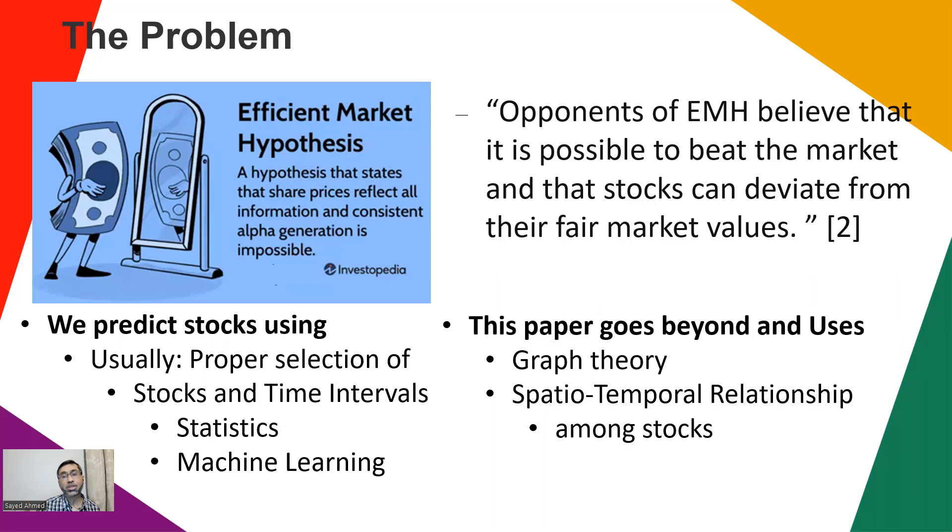And spatiotemporal relationships among the stocks. So graph theory means the stock market, the interactions among the stocks - they represent it as a graph, and then they find out the spatial dependency. When you represent a graph, the spatial relationship among them and the time interval relationship on their historical stock prices.